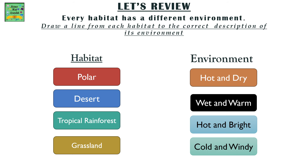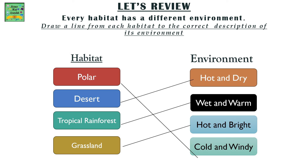Let's review. Every habitat has a different environment. Draw a line from each habitat to the correct description of its environment. The habitats are: polar, desert, tropical rainforest, and grassland. The environments are: hot and dry, wet and warm, hot and bright, and cold and windy. You can now check if the lines are correctly marked.